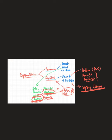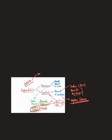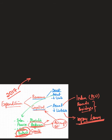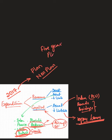This revenue and capital classification has been in place since 2017. Before 2017, expenditures were classified on the basis of planned and non-planned expenditures. And before 2017, we had five-year plans.